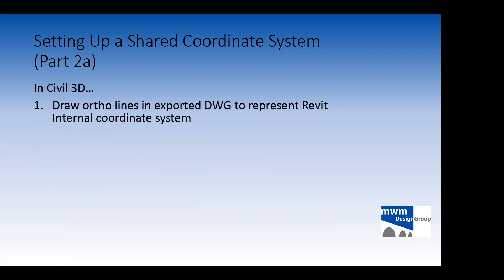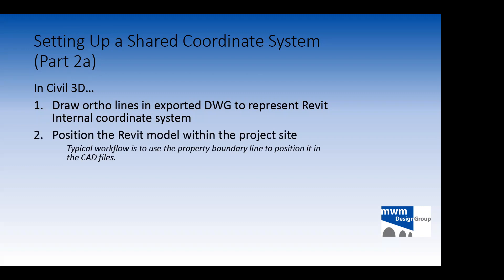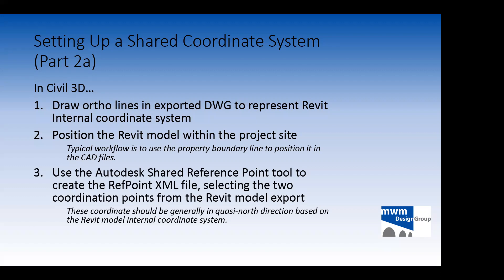Once we're done with the Revit part, we jump over to Civil 3D. I like to draw ortho lines in the initial exported drawing that represent the Revit internal coordinate system. The next thing is to position the Revit model within the project site — typically aligning a boundary line from the exported Revit model with the boundary in our site plan CAD files. Then we use the Autodesk shared reference point tool to create a ref point XML file, which gives Revit the information it needs to set up the shared coordinate system based on the drawing files.